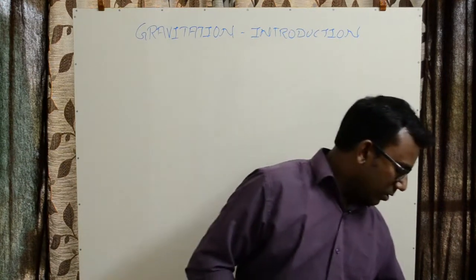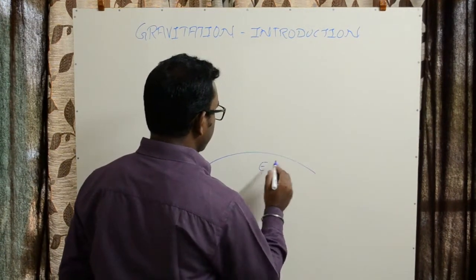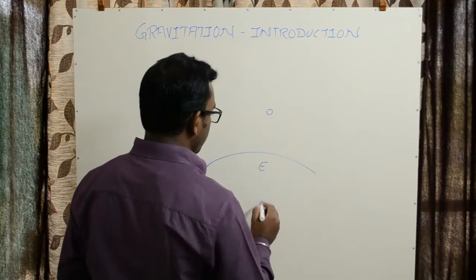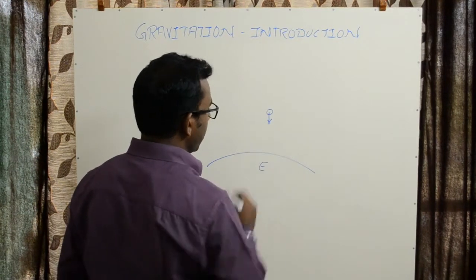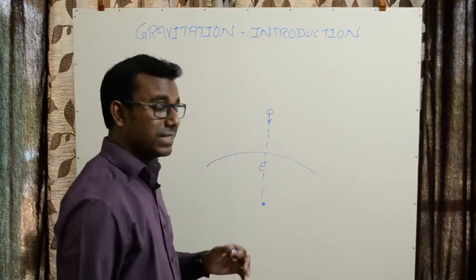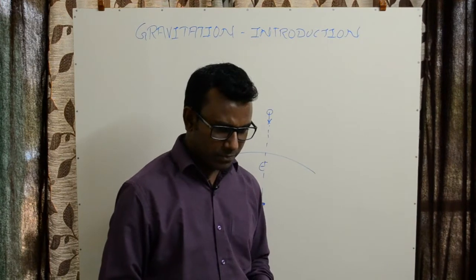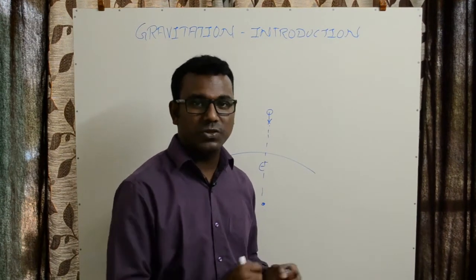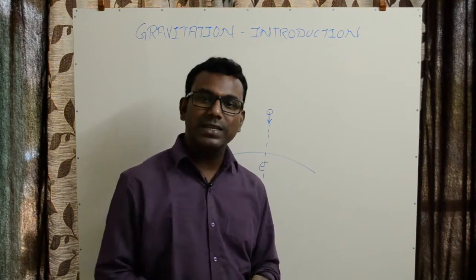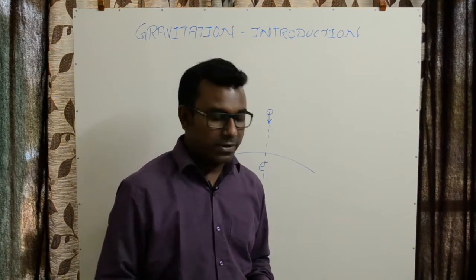So for example, this is my earth and this is that object, so that attraction, the gravitational force of attraction, is directly towards the center of the earth and that's the reason it falls vertically downward. This should now be clear to you what gravitation means and how it got discovered.